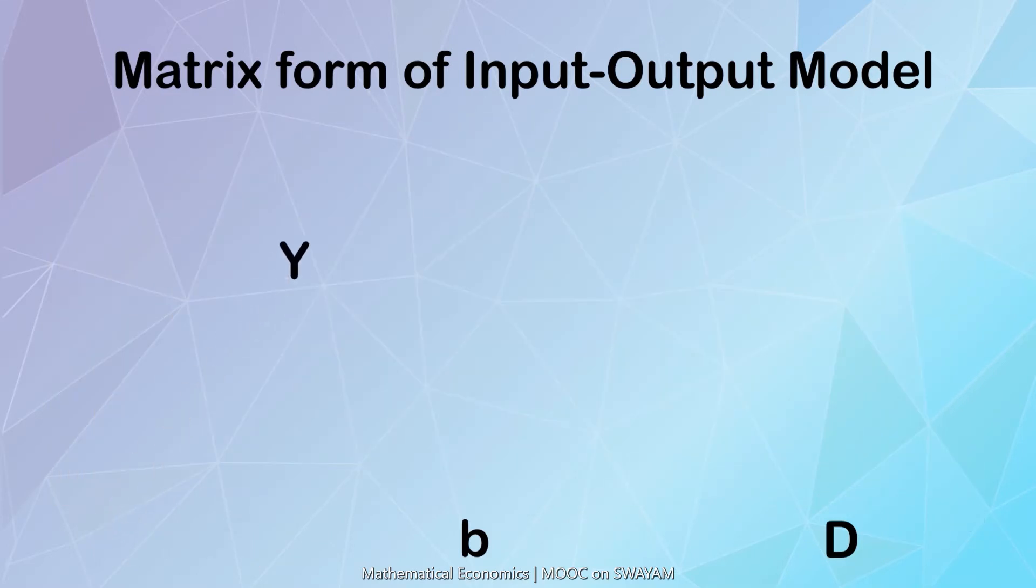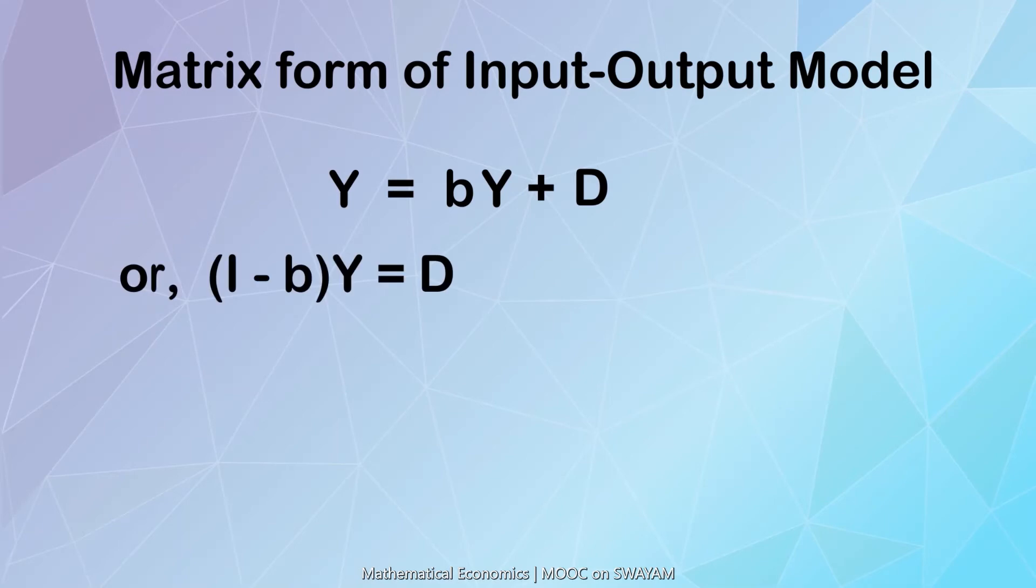In short, we may write Y equals bY plus D. Simplifying, we get I minus b into Y equals D. I is an identity matrix of order n by n.